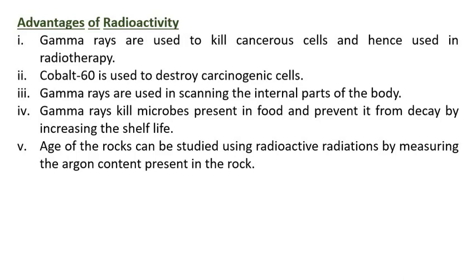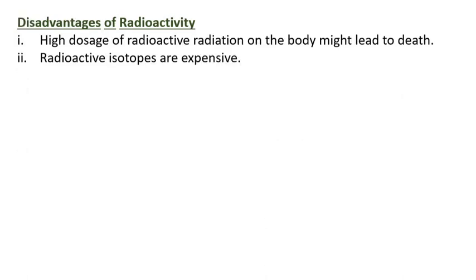Advantages of radioactivity: Gamma rays are used to kill cancerous cells and hence are used in radiotherapy. Cobalt-60 is used to destroy carcinogenic cells. Gamma rays are used in scanning the internal parts of the body and to kill microbes in food, preventing decay by increasing shelf life. The age of rocks can be studied using radioactive radiations by measuring the argon content present in the rock. Disadvantages of radioactivity: High dosage of radioactive radiation on the body might lead to death, and radioactive isotopes are expensive.